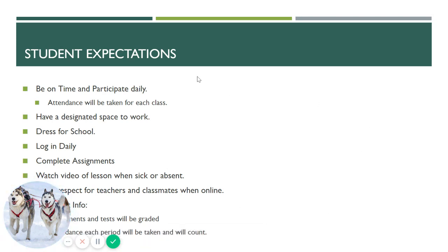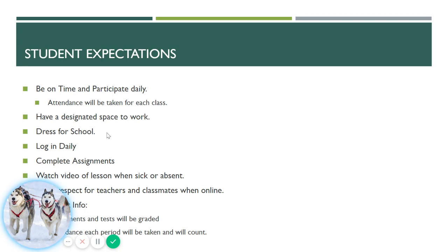What is really important for you as a student: a main thing is to be on time and participate every day. During distance learning, attendance will be taken for each class, so it's very important that you're logged in and on time so your teacher can mark you present. Have a designated space to work — find a spot in your house where you can sit, attend your live sessions, and focus. Dress for school: during distance learning you do not have to be in uniform every day, but you do have to dress according to the district dress code.